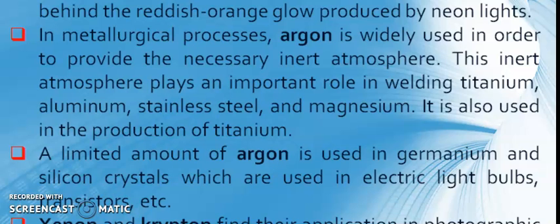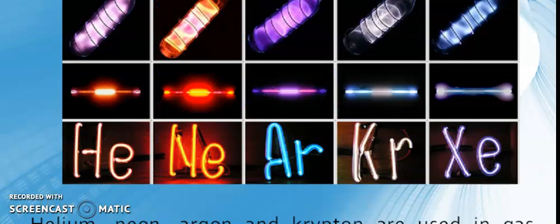Xenon and Krypton find their application in photographic lights. Due to the generation of very bright light, it is also used in lighthouses. Neon, Xenon, and Krypton are used to produce different colored lights. So Helium, Neon, Argon, and Krypton are used in gas decorative lighting called Neon lights. Radon is radioactive and thereby it is not used for decorative lighting.